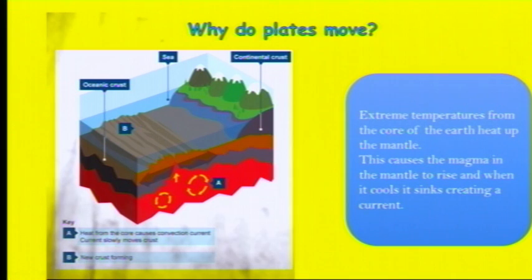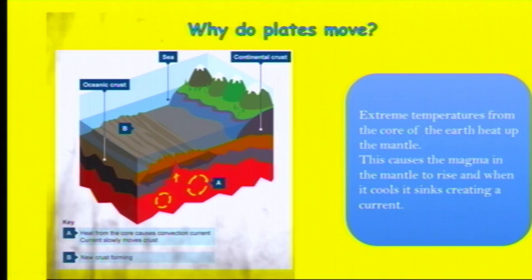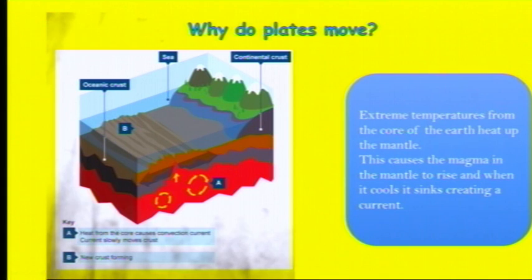Why do the plates move? Well it's all because of the convection currents, which you can see at point A in this diagram. The convection currents move because when they're at the bottom of the mantle nearest the core, the liquid heats up. We know when something heats up it rises, so it rises to the top nearest the crust. When it reaches the crust it will cool down and then sink back down to the bottom of the mantle. So we've got a rotation of these convection currents constantly moving. If they're moving away from each other they pull the crust on top apart; if they move towards each other they pull those pieces of crust towards each other.